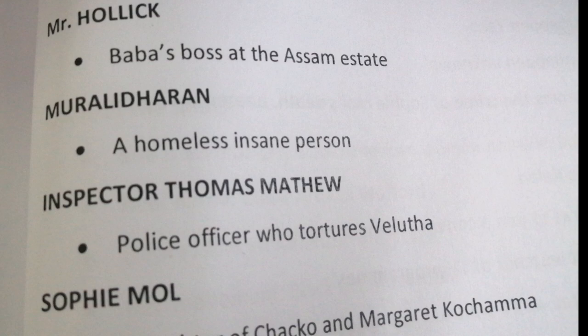Sophie Mol is the daughter of Chacko and Margaret Kochamma. She dies by drowning in the water.